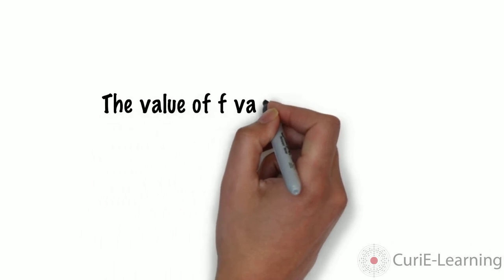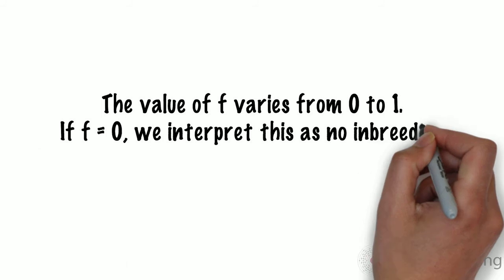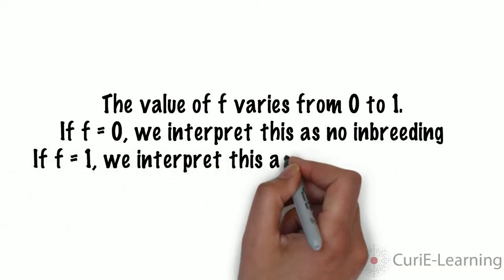The value of f varies from 0 to 1, with 0 representing no inbreeding, and 1 representing complete inbreeding.